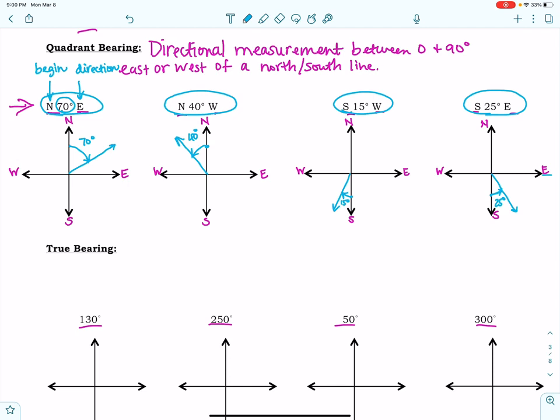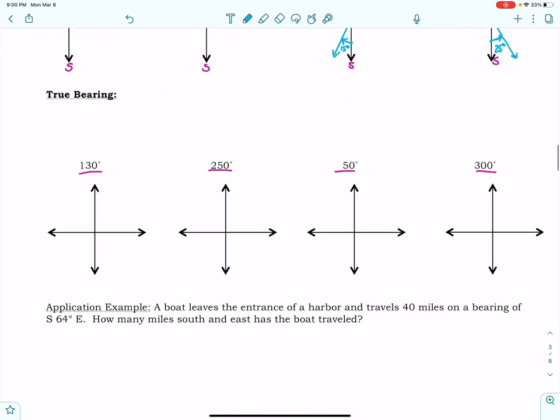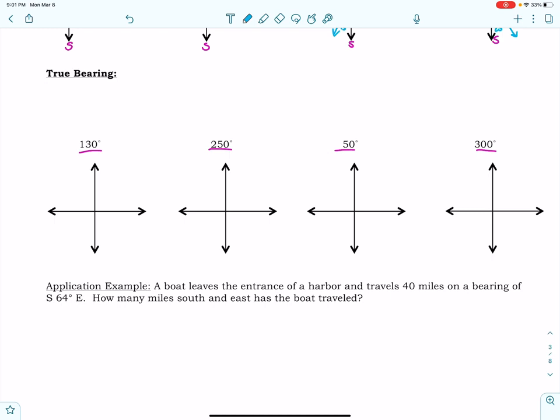Now we're going to look at true bearings. True bearings are going to be a little bit more complicated because with a true bearing, you're not really given any guidance as to where to start. For a true bearing, there are some rules: you always start at North, and you always move clockwise. This is also a directional measure, but now the angle is measured from North, clockwise.